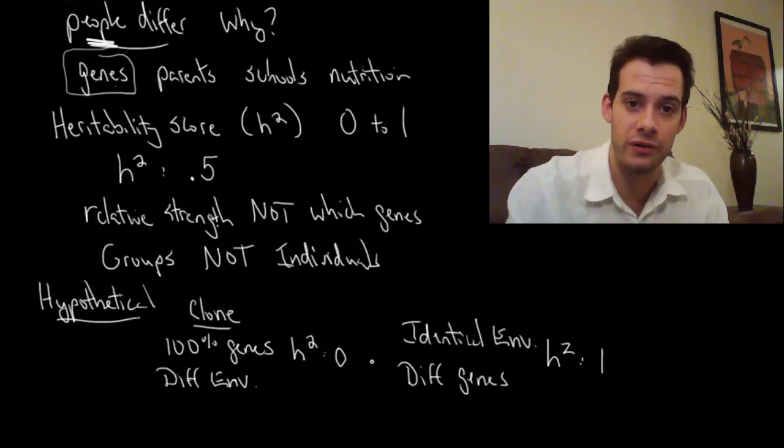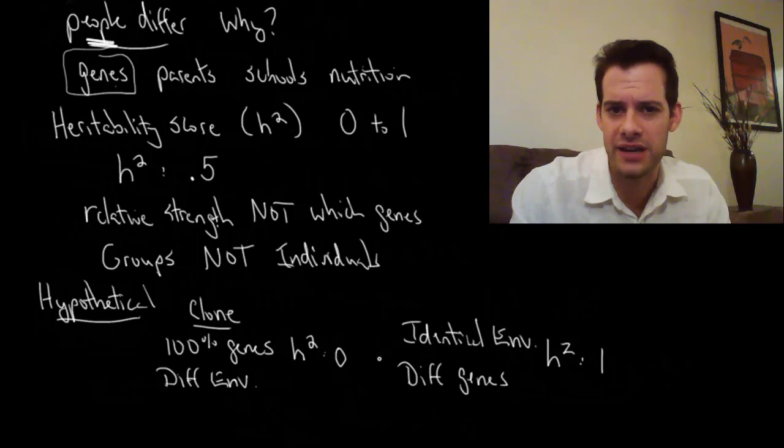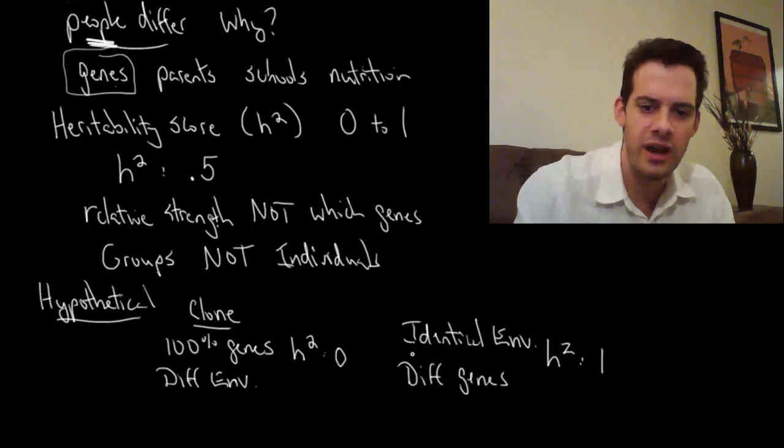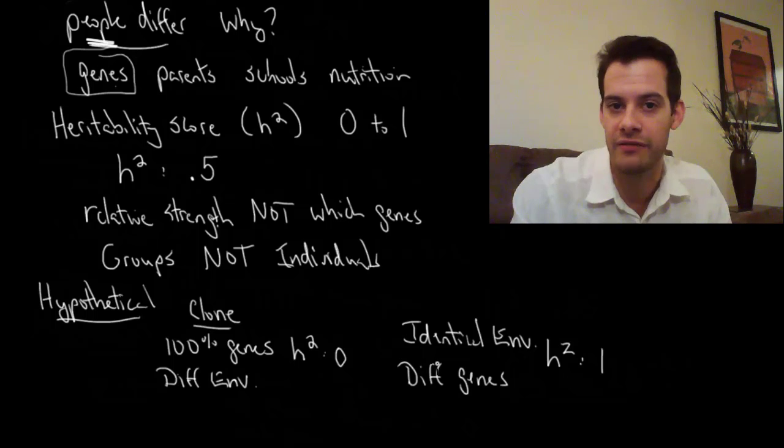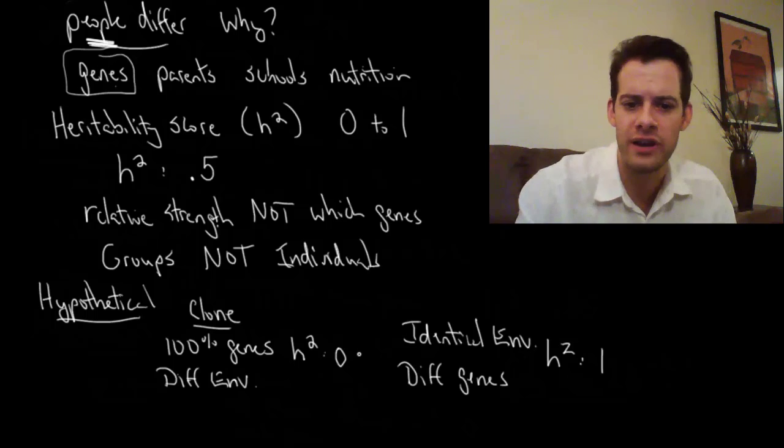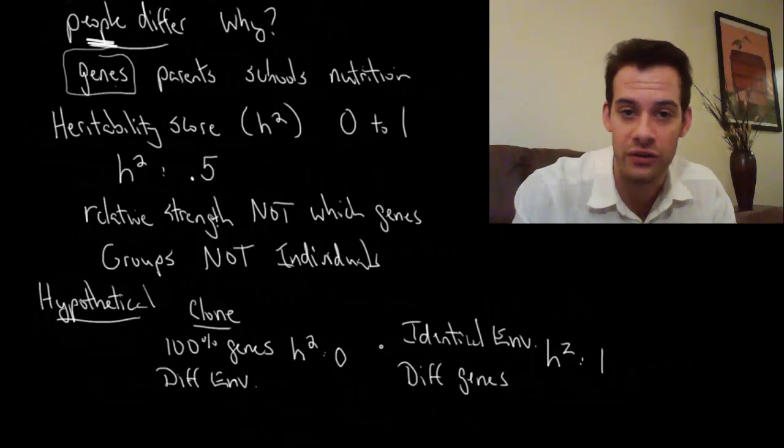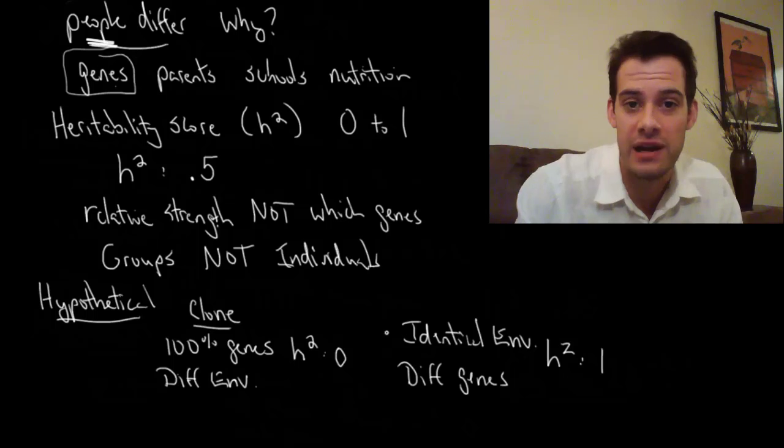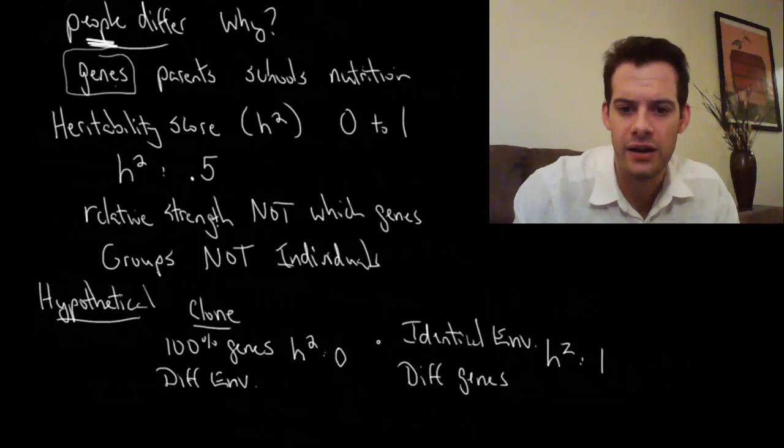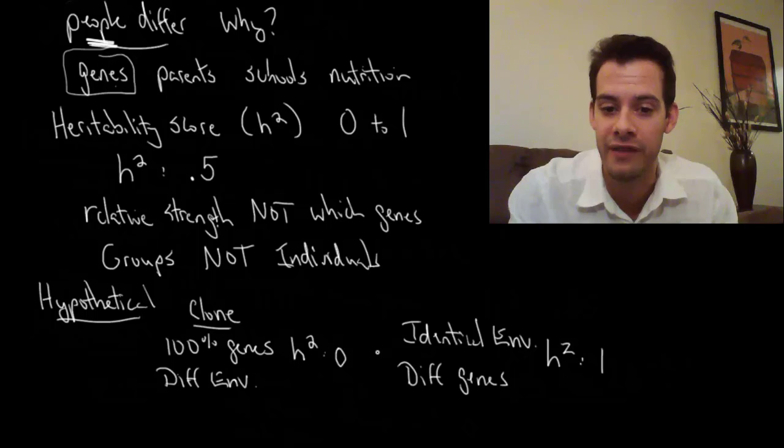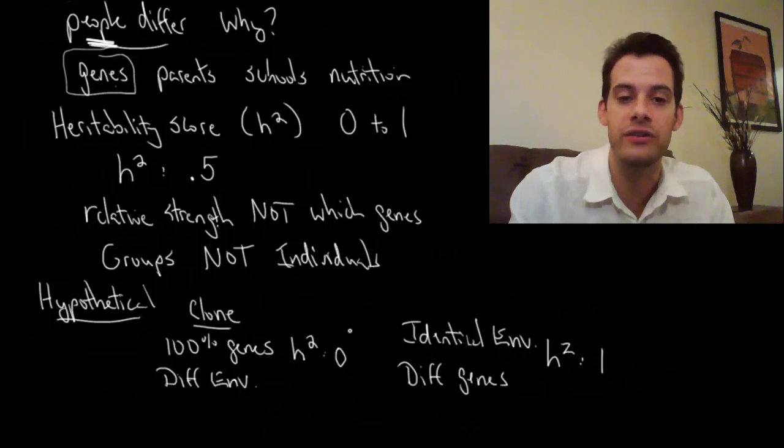Now this gets back to that question that I posed earlier which is why do elderly populations have higher heritability scores? Well what you're doing is when you look at elderly populations you're comparing people who have more similar environments. Well how is that happening? What you're doing is you're comparing only people who have survived that long and that cuts out a lot of the really extreme environments people might have been in—the people who were really malnourished, people who were exposed to lots of disease and illness. Those people aren't around anymore. Those extremes of environment aren't being included in your study. So what you're doing is you're comparing more similar environments and so you shouldn't be surprised that your heritability score goes up just like it would in our hypothetical example.